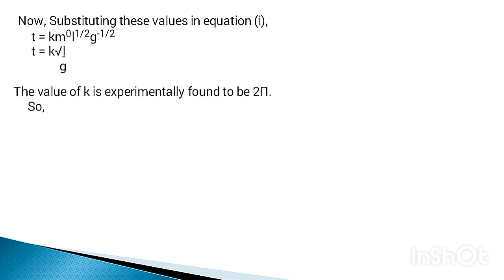The value of k is experimentally found to be 2π. Since k is a dimensionless constant, we cannot determine its value using dimensional analysis alone. Therefore, T = 2π√(l/g), which is the required equation. This is all for this video. If you have any problem on any topic of physics, just comment below and I will be solving it in my next video. Thank you very much.